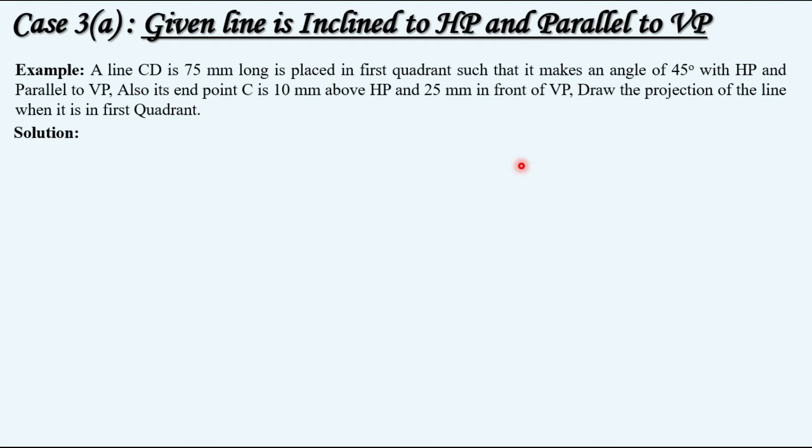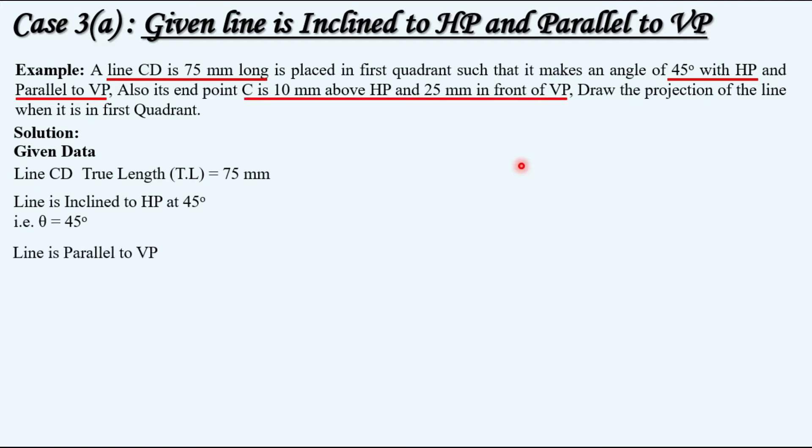Let's extract the given data first. Line CD: 75 mm long, that is the true length. Angle with HP is labeled as theta, so theta is 45 degrees as per the given question, and the line is given parallel to VP.